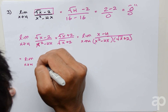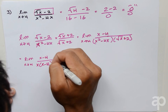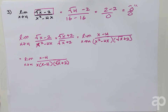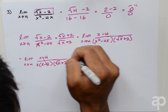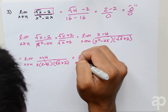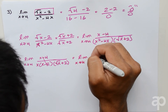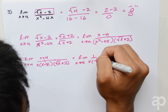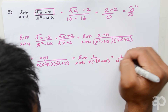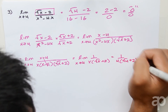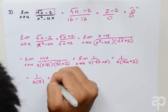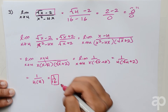Factoring gives us the limit as x approaches 4 of x minus 4 over x times (x minus 4) times (square root of x plus 2). The (x minus 4) in the numerator and denominator cancel, yielding the limit as x approaches 4 of 1 over x times (square root of x plus 2). Substituting 4 gives us 1 over 4 times 4, or 1 over 16.